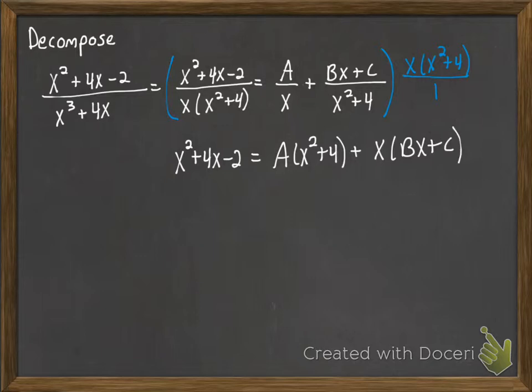And then we continue now to simplify. So we distribute the a through, we get ax squared plus 4a. We distribute the x through, we get bx squared plus cx. And at this point, we then look to start collecting our like terms together.